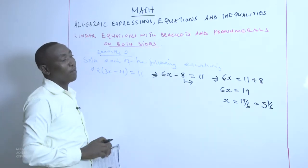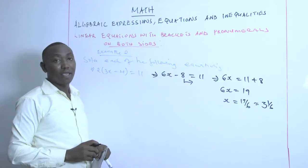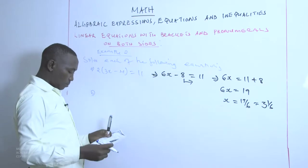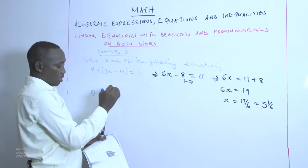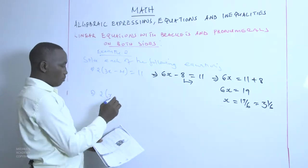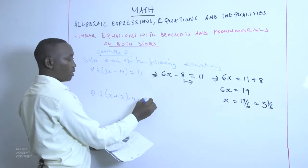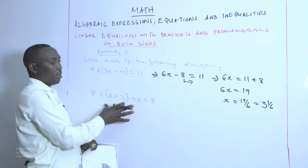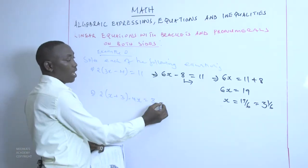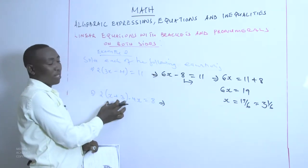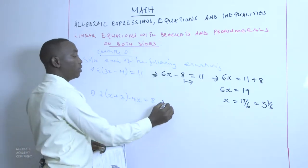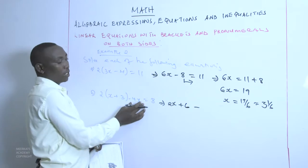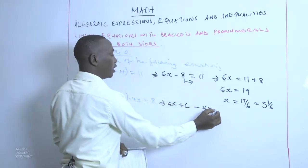The value of X for this equation is 3 and a sixth. Part B: 2 into (X plus 3) minus 4X equals 8. To solve this equation, we expand the brackets on the left-hand side — multiplying whatever is outside the bracket with everything inside. This gives us 2 multiplied by X is 2X, 2 multiplied by positive 3 is positive 6, then we continue with terms outside the bracket: minus 4X equals 8.